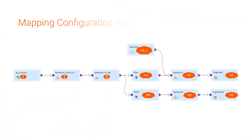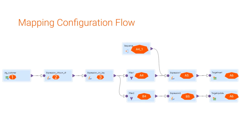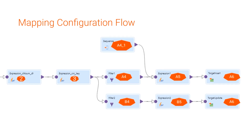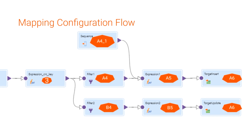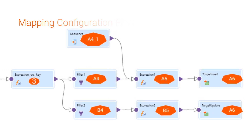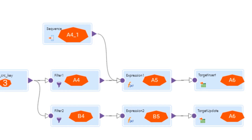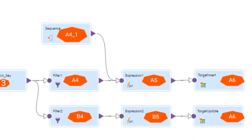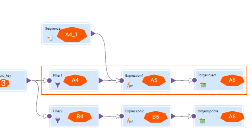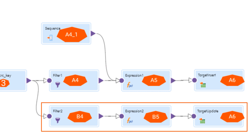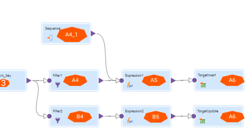We want to create a mapping that inserts new records into a target dimension table. If an existing record is changed, the mapping closes the record and then creates a new version of the record with the updated value. We'll configure the mapping so that data flows in two branches. The first branch inserts a record for every new and updated record. The second branch updates records in the dimension table that have changed.